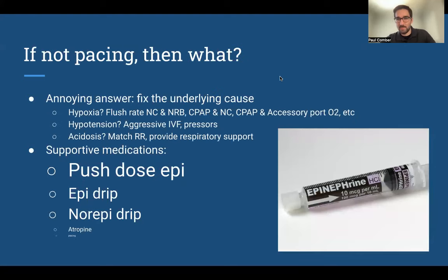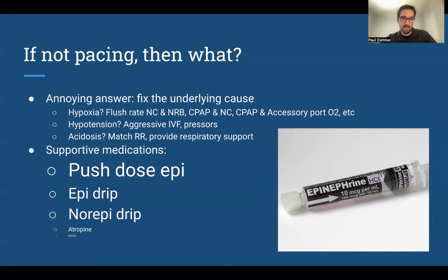If we shouldn't pace them, then what should we do? The answer is to fix the underlying cause. If they're hypoxic, that means flooding them with oxygen — not just a non-rebreather, not just nasal cannula, but using two sources of oxygen at flush rate, cranked all the way up. Yes, it's annoying to carry two oxygen cylinders, but it's the right thing to do. If they're hypotensive, be aggressive with IV fluids and be early with pressors. If there's an acidotic process, think about trying to match the patient's respiratory rate as best you can when you take over respirations.